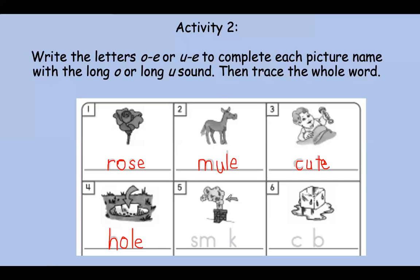Number five. This is smoke. See the arrow pointing to the smoke coming out of the chimney? Say it slow. Smoke. What do you hear there? If you said long O, you are right. Smoke.